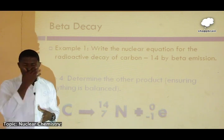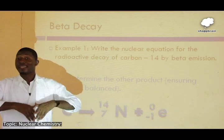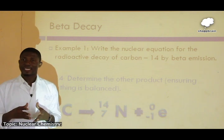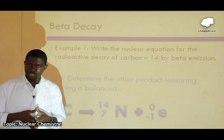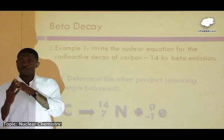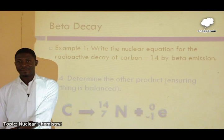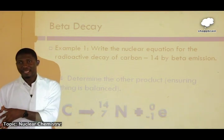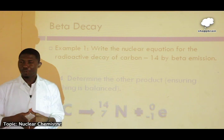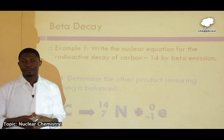In gamma decay, there is no change in mass number and no change in atomic number. When writing a gamma decay equation, we write the parent element, then the arrow, then the gamma symbol with mass number zero and atomic number zero, and the same element as product. The mass and atomic numbers remain balanced. This brings us to the end of episode one of nuclear chemistry.